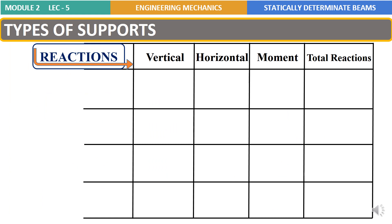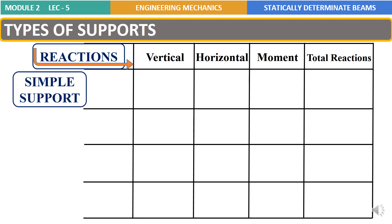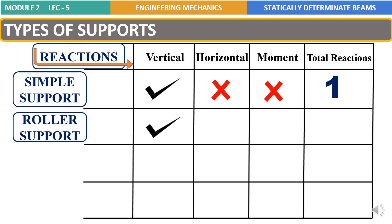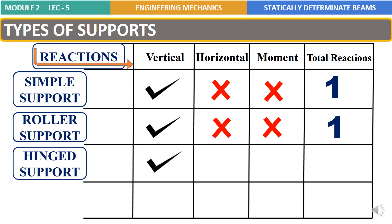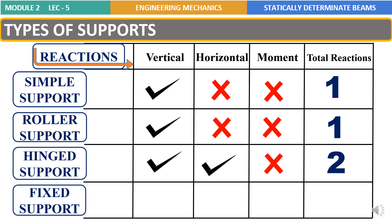Finally, let's look at the total reactions for each type of support. For a simple support: vertical reaction present, horizontal reaction not present, moment not present — total reactions = 1. For a roller support: vertical reaction present, horizontal reaction not present, moment not present — total reactions = 1. For a hinged support: vertical reaction present, horizontal reaction present, moment not present — total reactions = 2. For a fixed support: vertical reaction present, horizontal reaction present, and moment reaction also present — total reactions = 3.